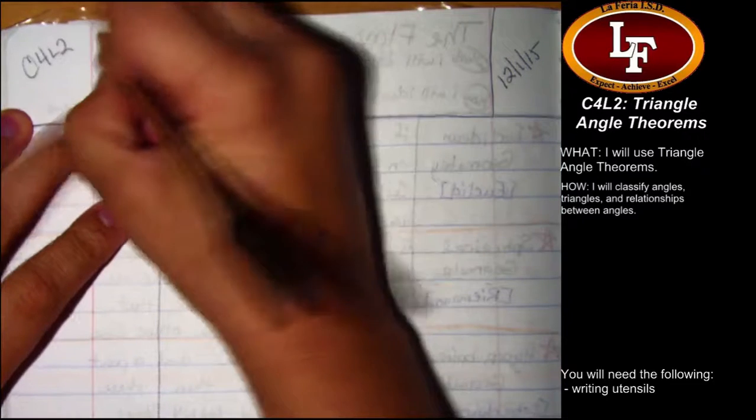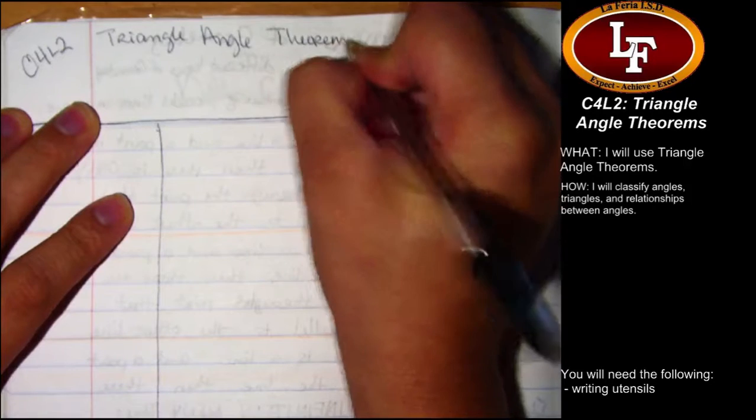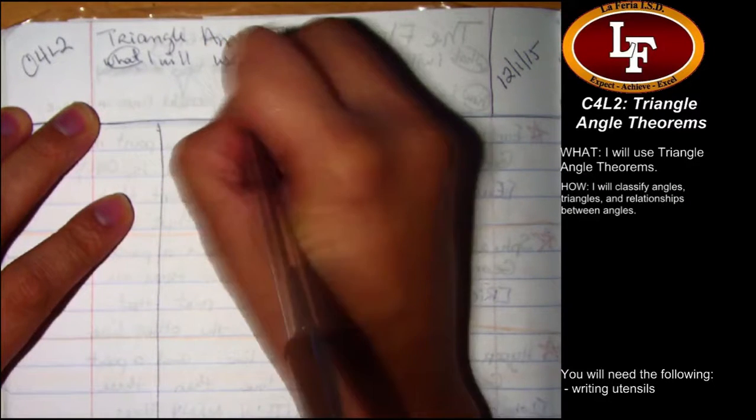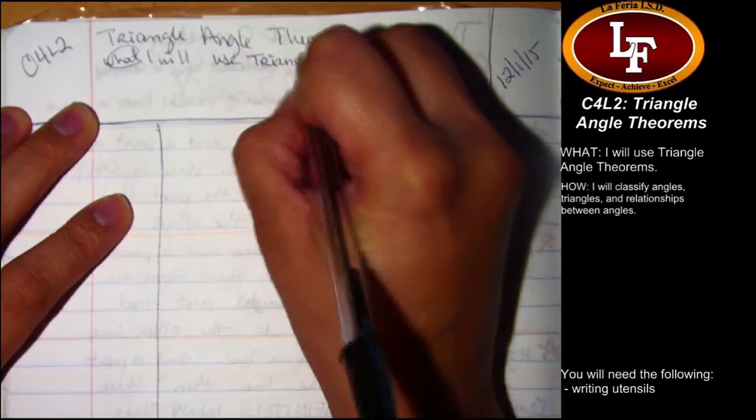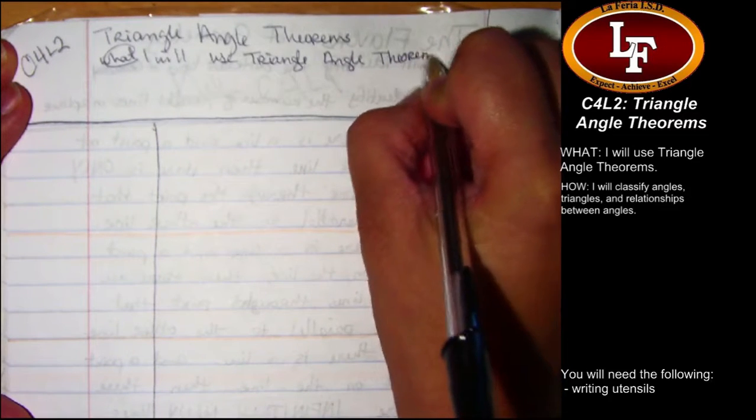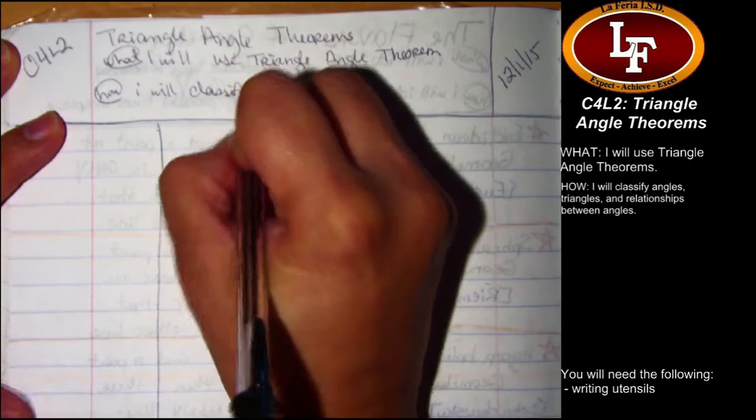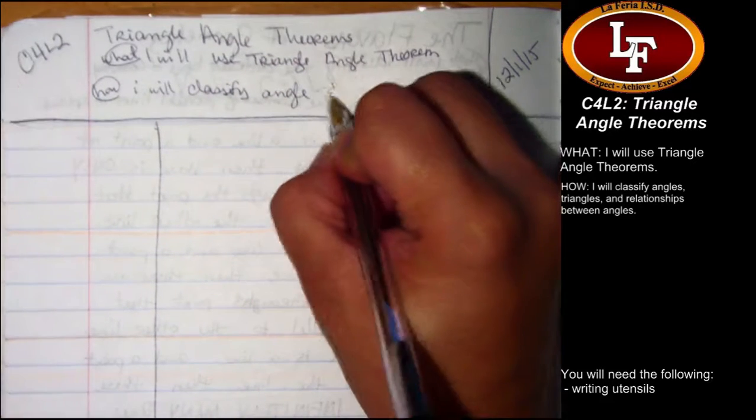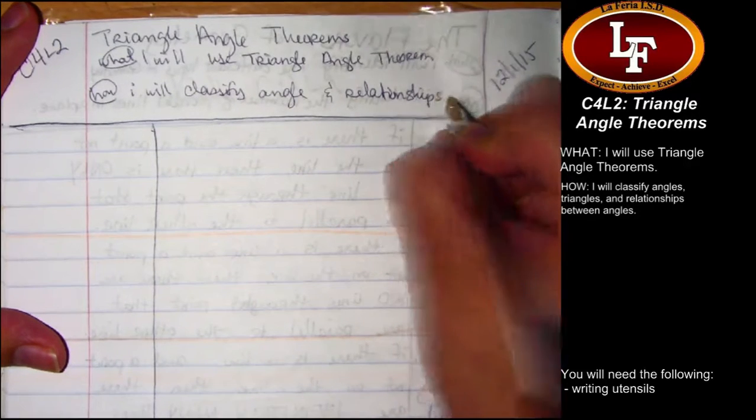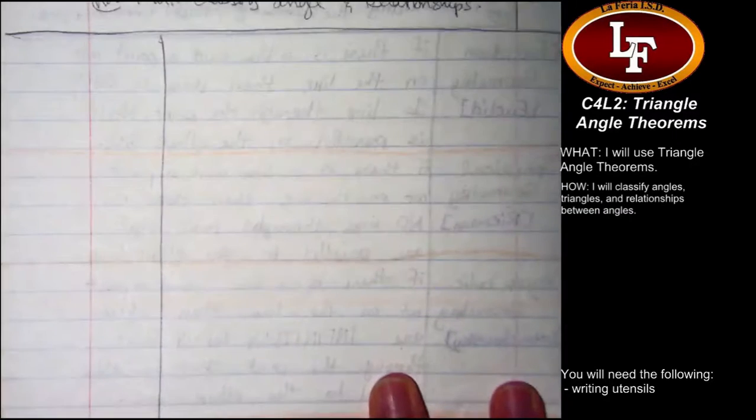Today's lesson code, chapter four, lesson two. We will be looking at triangle angle theorems. Not only will we be looking at them, but we will be using them to solve problems. Very much along the lines of, find the value of this variable, and find the missing measurements of an angle in this triangle. And the way we're going to make that happen is by being really familiar with our types of angles, classifying angles as acute or obtuse or right, and then talking about the relationships between the different angles, whether they're supplementary or complementary, whether they're vertical or adjacent.